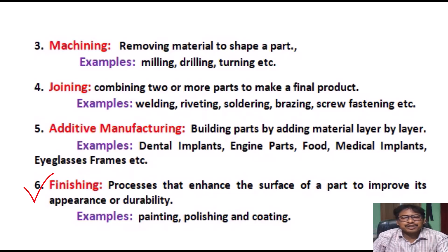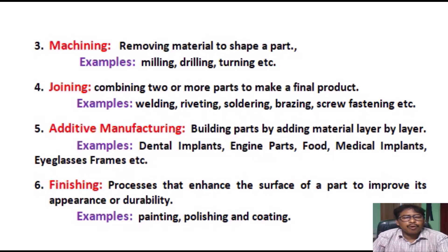Six: Finishing — processes that enhance the surface of a part to improve its appearance or durability. Finishing processes aim to alter the surface of a manufacturing part in order to achieve a particular characteristic. Examples: painting, polishing, coating, sanding, grinding, anodizing, electroplating, etc.